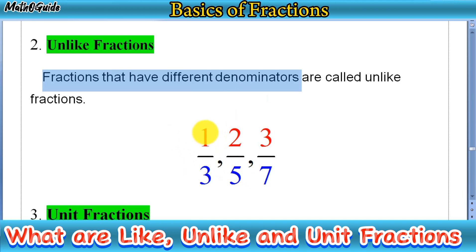In this example, you can see that 1 over 3, 2 over 5, and 3 over 7. In this set of fractions, you can see three fractions and we have three different denominators. One is 3, second is 5, and third is 7. So you can call these fractions unlike fractions.